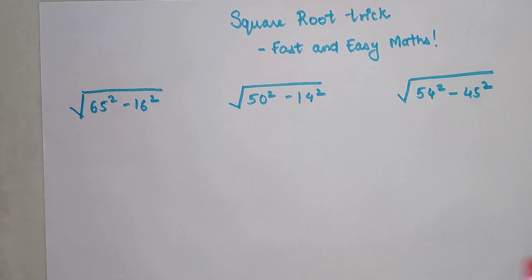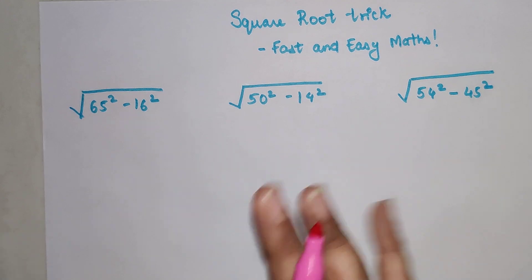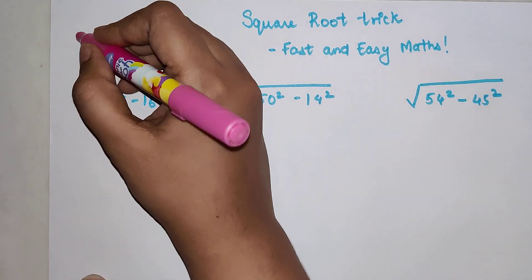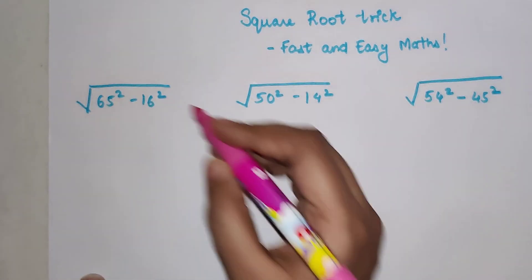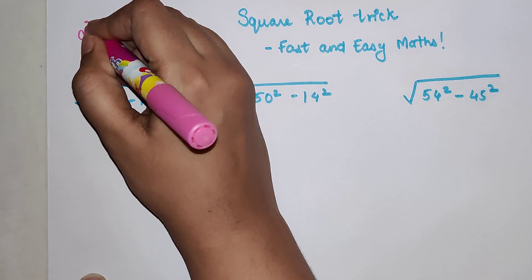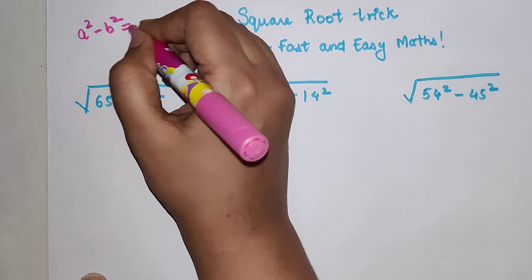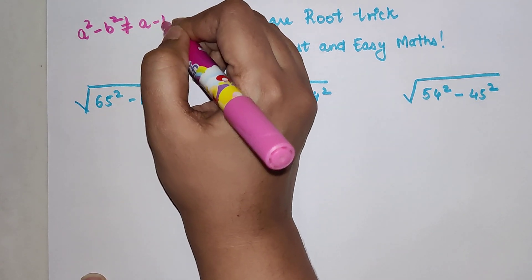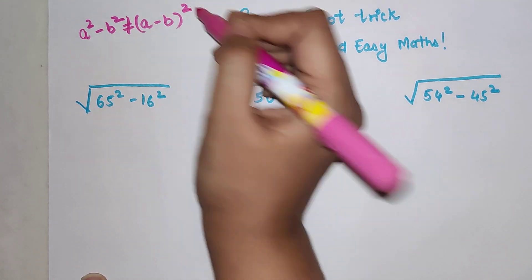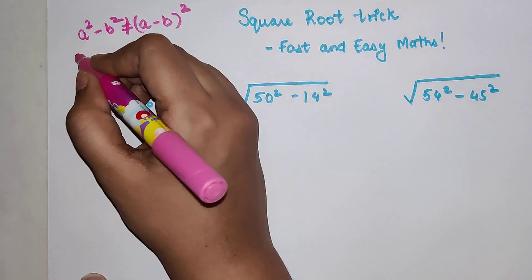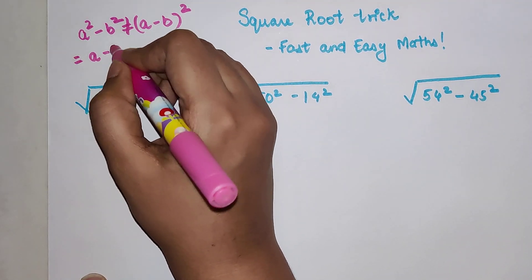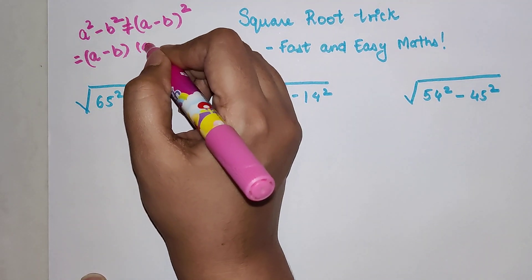The trick is super simple. I'll explain how to go about this. Please remember one identity formula: a² - b². Understand it is never equal to (a - b)², but is actually equal to (a - b) times (a + b).